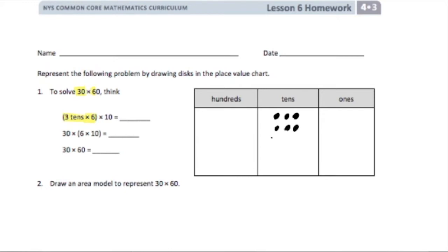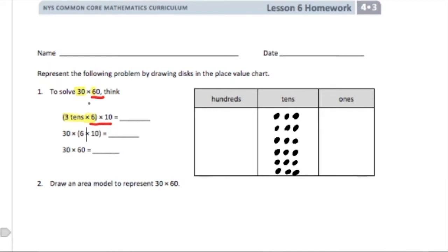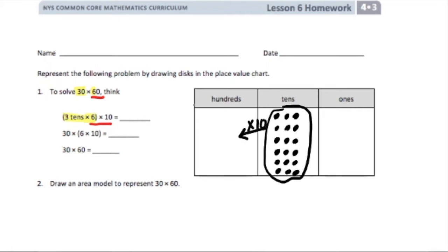I already had it one time, here's two, three, four, five, and six. Now I need to multiply that times 10 because this 60 is six times 10. So I pretty much just decompose this 60 into six times 10. I did three tens times six — what happens when I multiply this times 10? This value moves up to the next place value.